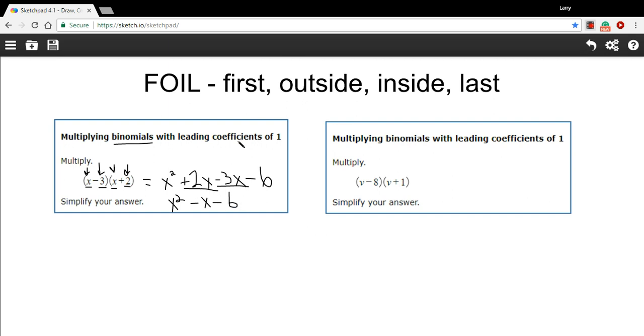So that's FOIL. Let's practice this one more time. Here we have v minus 8 times v plus 1. V instead of x, but that doesn't change anything. We'll start with the first terms. v times v is v squared.